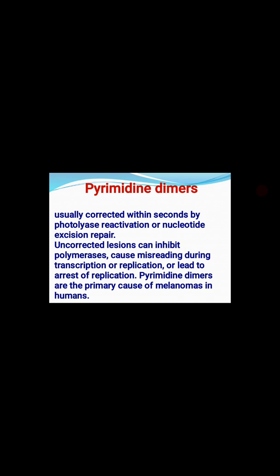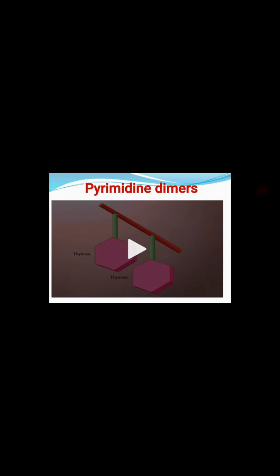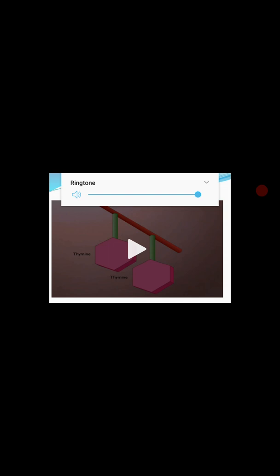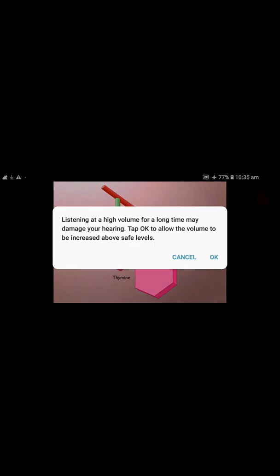If the lesions are not corrected, uncorrected pyrimidine dimers will inhibit DNA polymerase, blocking the replication process, and will cause misreading during transcription and replication — meaning the central dogma will be completely affected. When pyrimidine dimers are produced, they will normally get repaired by either photolyase-mediated photoreactivation or nucleotide excision repair. A video will now demonstrate how pyrimidine dimer formation occurs and how it is cleared.